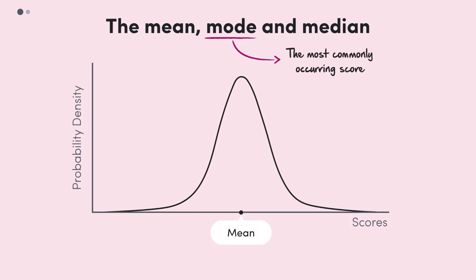Well, we know that the mode is the most commonly occurring score. In other words, the mode is the score directly under the highest peak of a distribution, since the peak indicates the highest frequency. Here, that's exactly where the mean is, right in the centre of the distribution. So the mean and the mode are the same in a normal distribution.